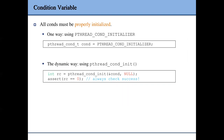Before we can use a condition variable we need to initialize it to a default state so it can be used by the functions. We have two ways to initialize the condition variable, just like a mutex. The first way is the static way using the constant PTHREAD_COND_INITIALIZER, which is a constant for the default state. If you assign this constant to a condition variable whose type is pthread_cond_t, it will be initialized to a default state.